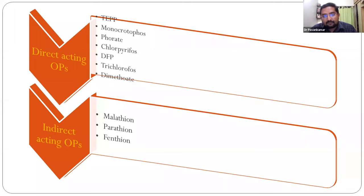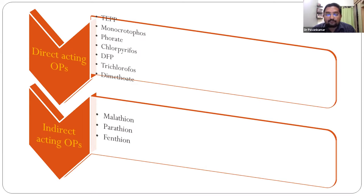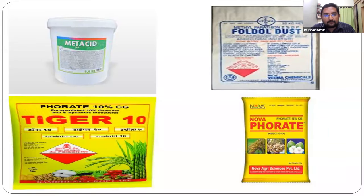By knowing the suffix or prefix 'phos,' we can determine the pesticide belongs to the organophosphate group. For indirectly acting compounds, activation is required once inside the body - malathion gets converted to malaoxon, parathion to paraoxon, fenthion to fenoxon. Commonly used organophosphorus pesticides in farm practice include Metacid (containing methylparathion), Rogor, Tiger, and Forate. In our region in Karnataka, forate is very commonly used.